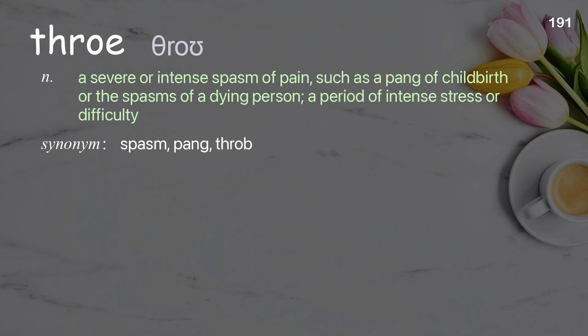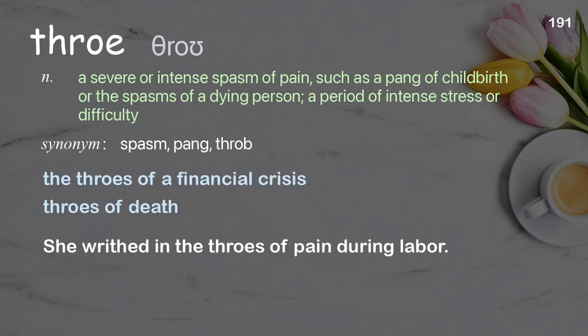Throes: a severe or intense spasm of pain, such as the pain of childbirth or the spasms of a dying person; a period of intense stress or difficulty. Examples: the throes of a financial crisis, throes of death. She writhed in the throes of pain during labor.